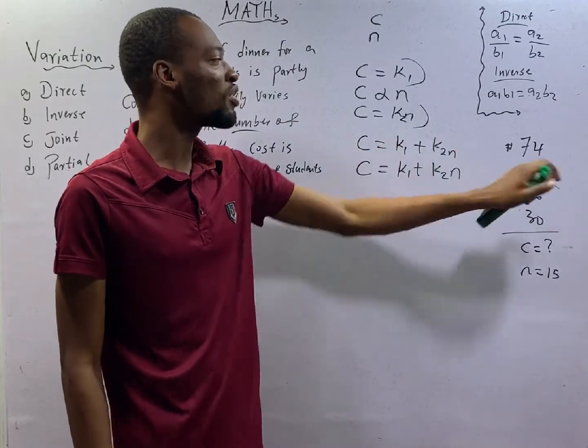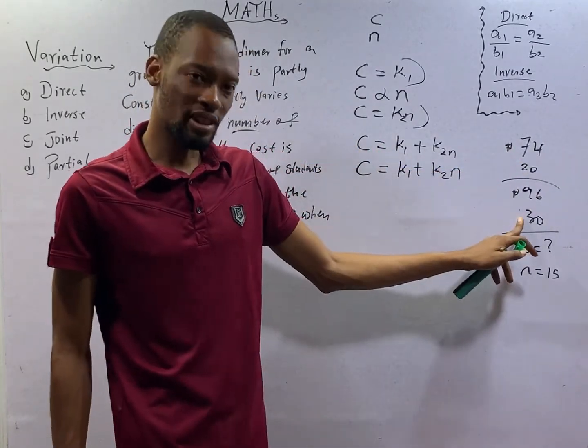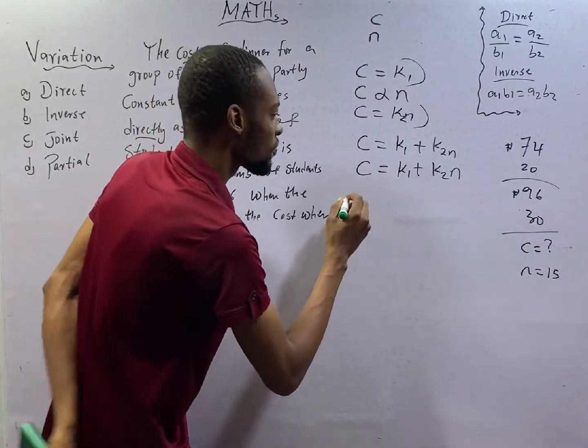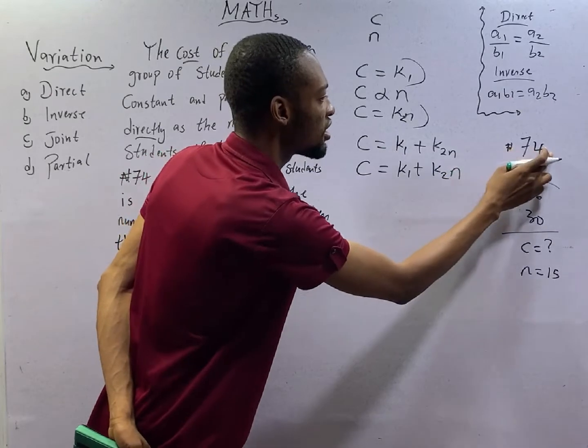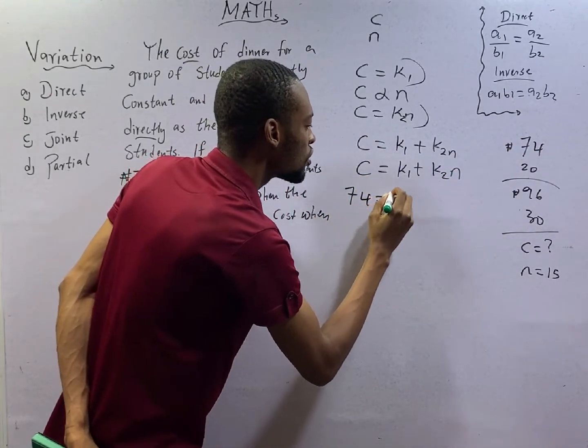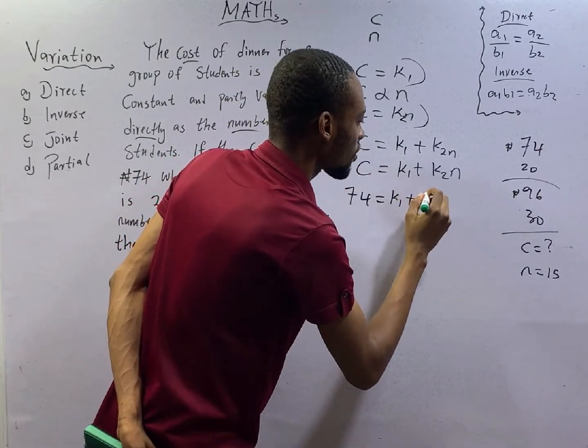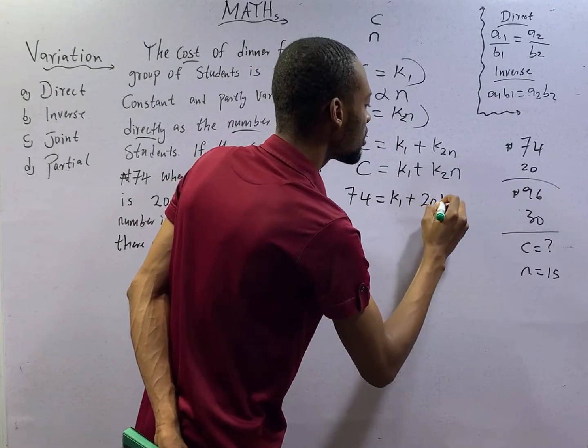The first equation, you put the first data. The second equation, you put the second data. We have cost here. Cost is 74. So from the first equation, 74 equals K1 plus 20K2. Let's call this equation 1.